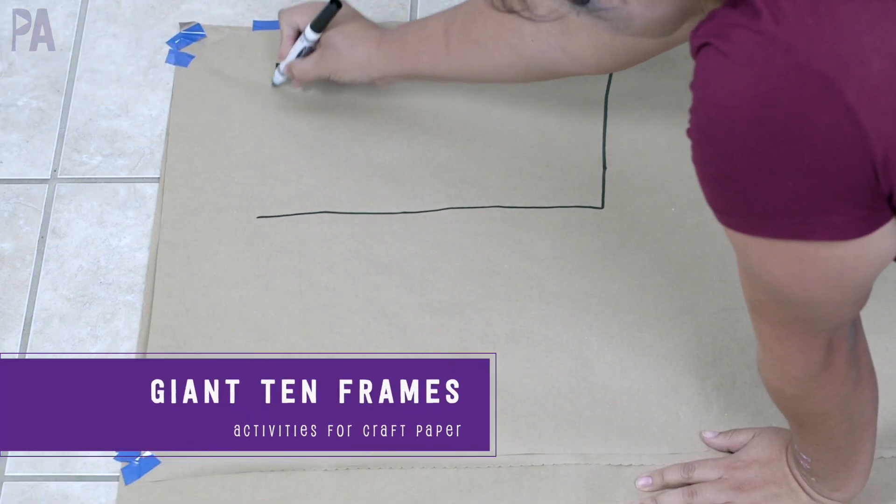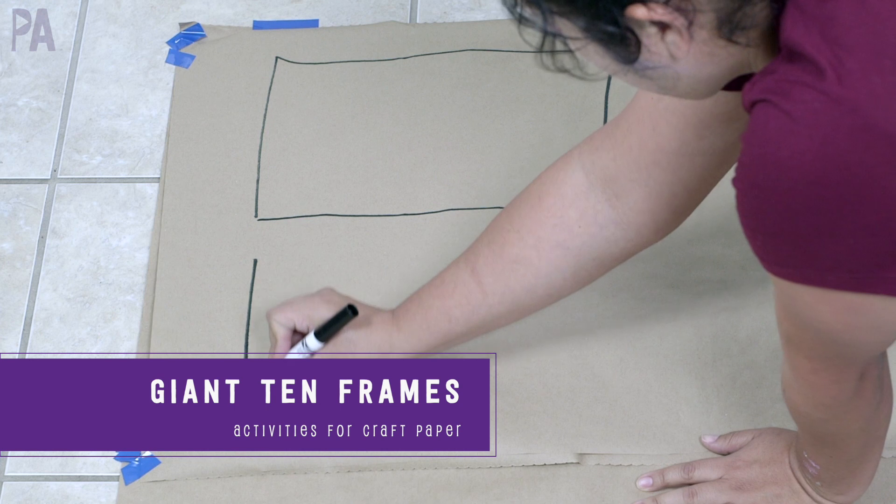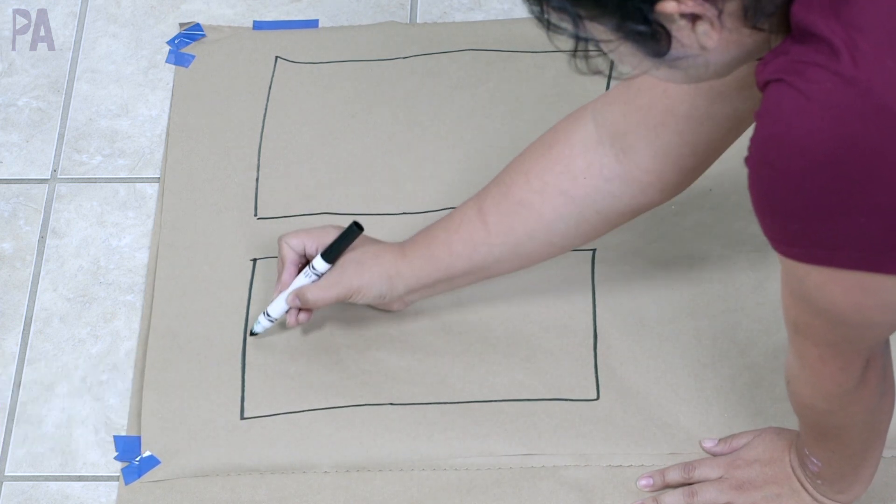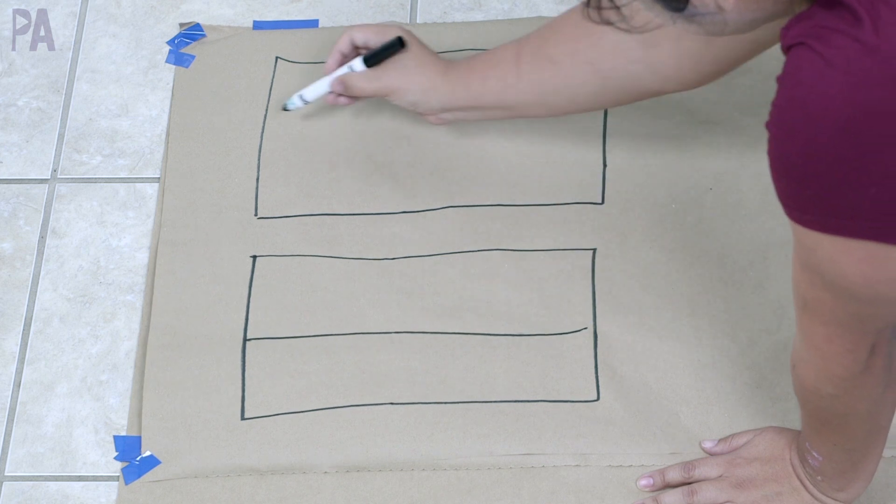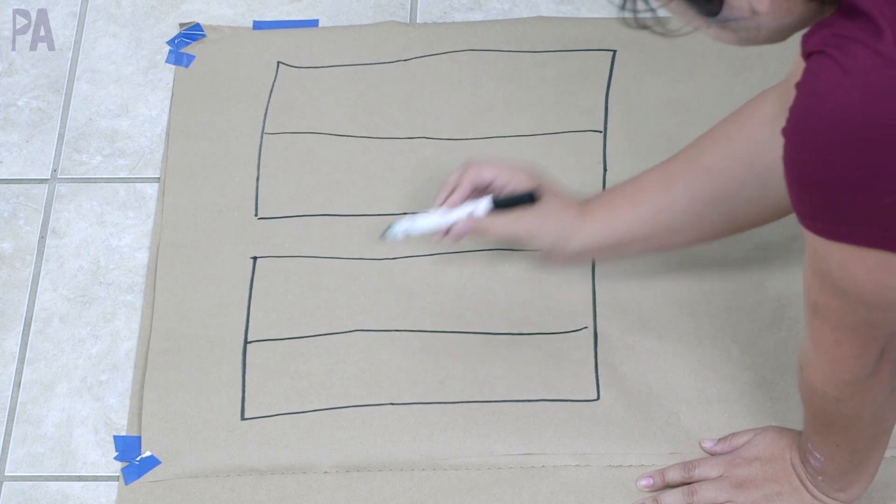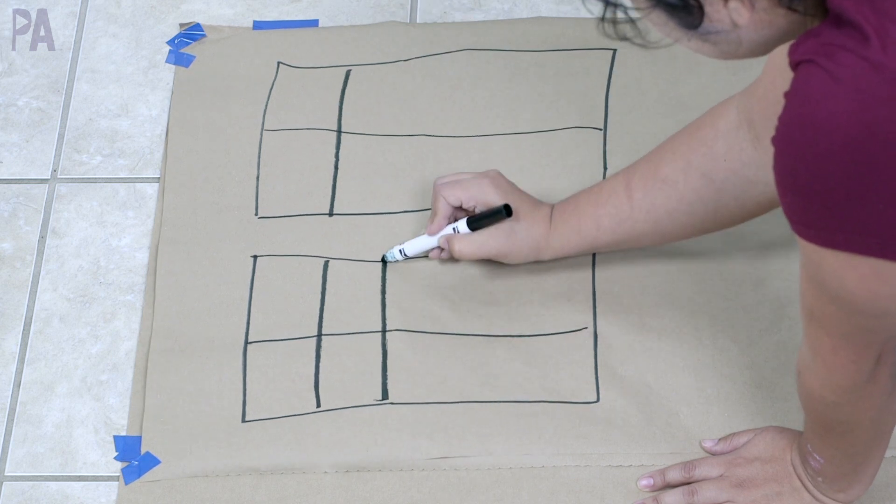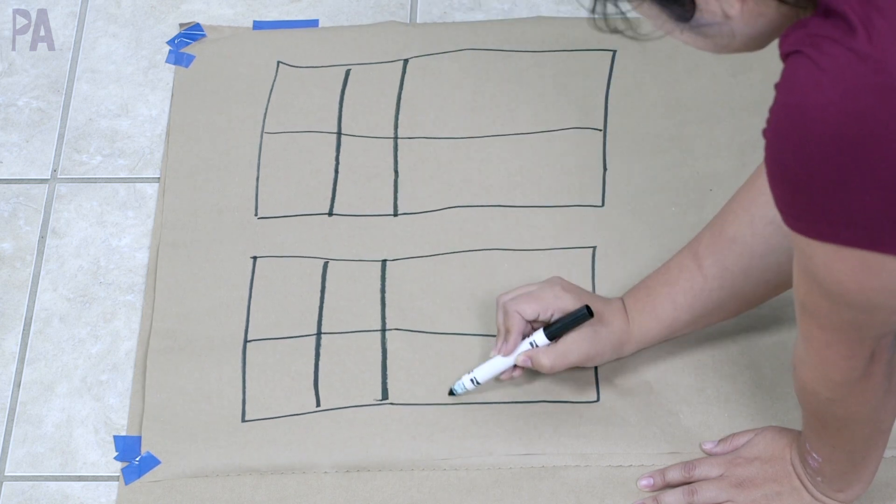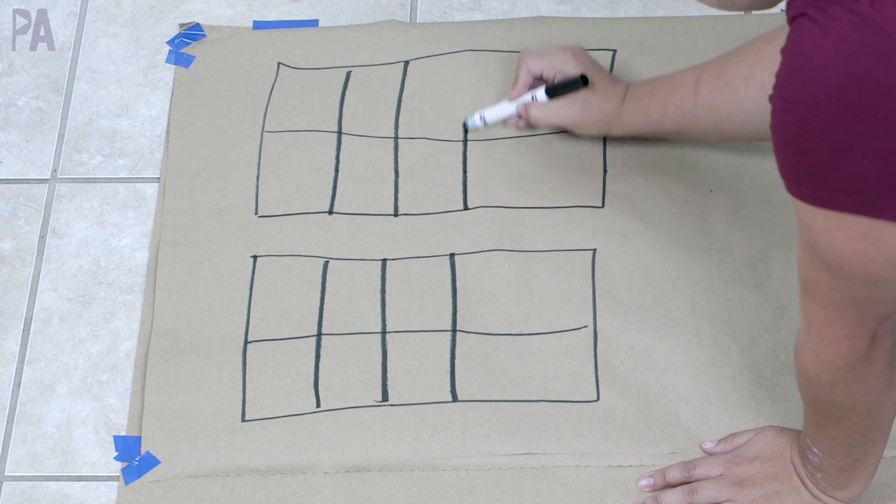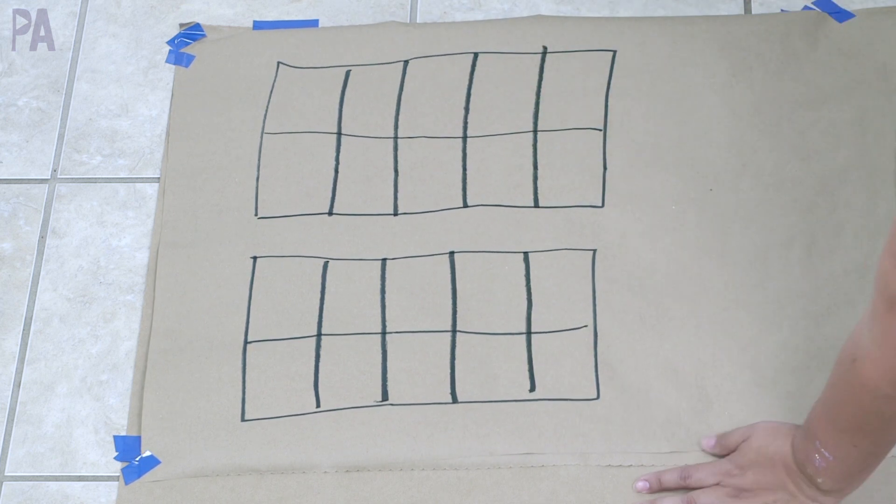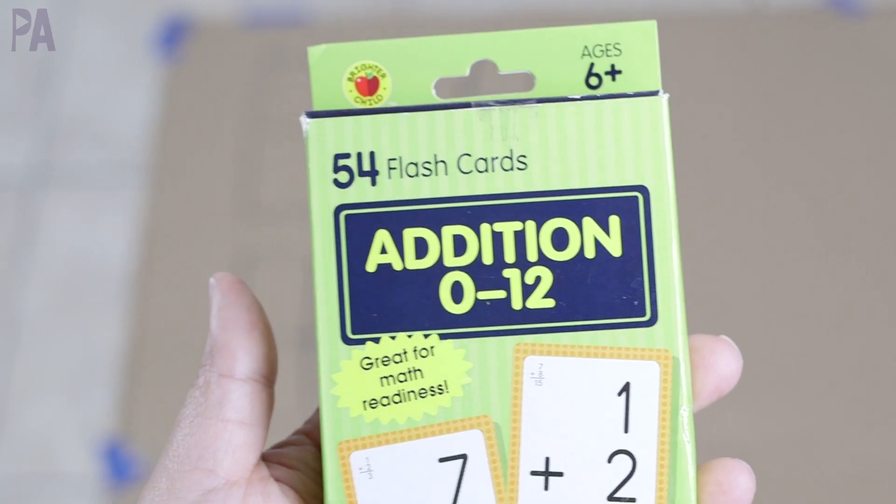If you haven't tried this activity before, this is a great thing to try. It's the giant 10 frames. So I am drawing a giant 10 frame, actually two of them on the paper, really, really big. Now, a lot of times I show you guys activities with 10 frames and I have some store-bought ones, but this is a great way to do it. Just simple with paper and a marker. So I'm giving each box 10 different boxes and I'm using 10 frames because we're going to be doing addition problems.